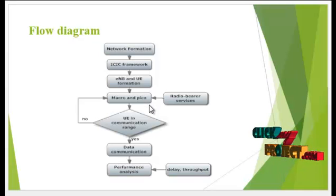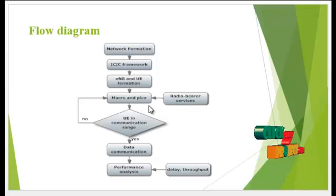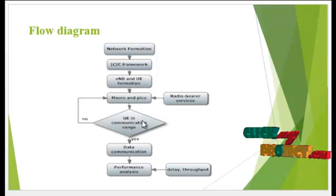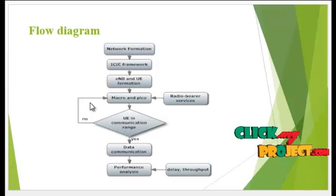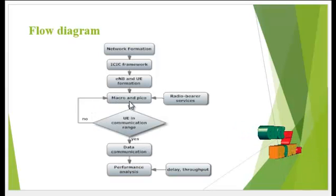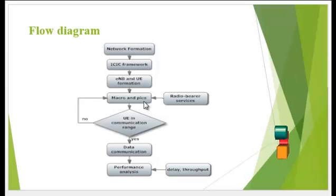The macro and pico cells are created and process communication using radio bearer services. If the UE is in the communication range, then data communication is performed in the network, and it again processes the macro and pico processes to organize the network with macro and pico constraints.